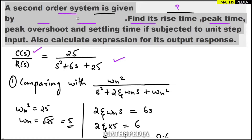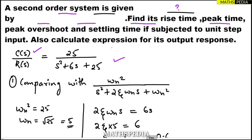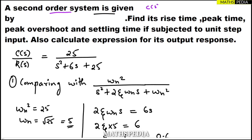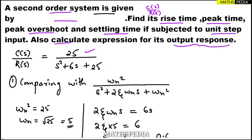In this video we'll be solving questions based on second order transfer functions, finding rise time, peak overshoot, and everything else. The question gives us a second order system transfer function: C(s)/R(s) = 25 / (s² + 6s + 25). We have to find rise time, peak time, peak overshoot, settling time when subjected to a unit step input, and also calculate the expression for the output response.